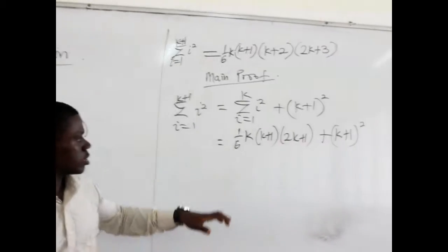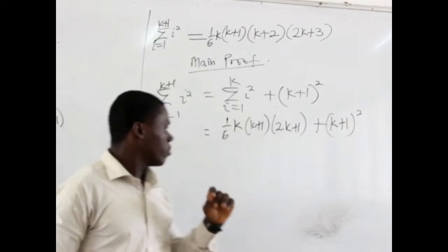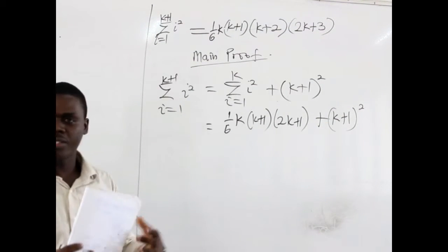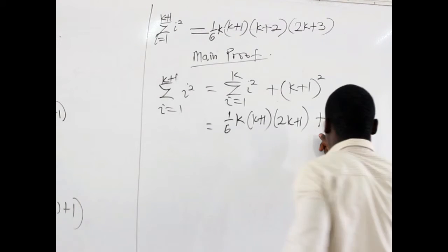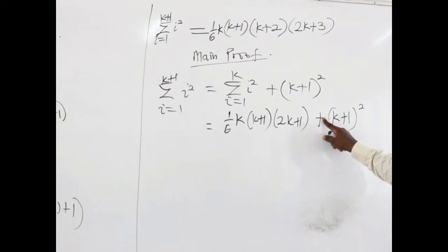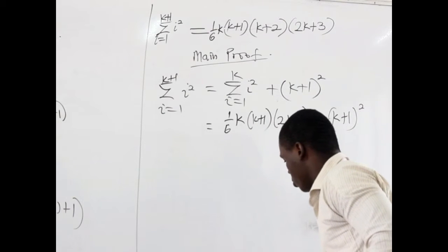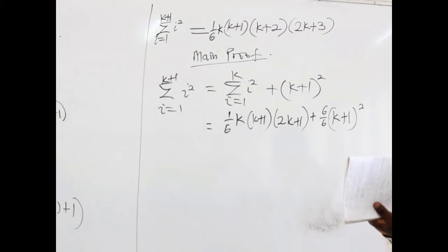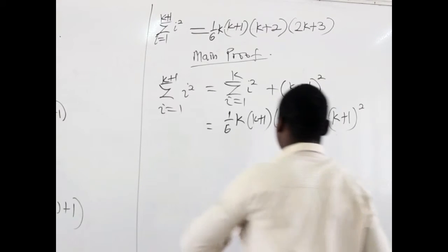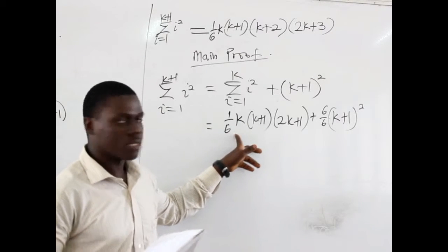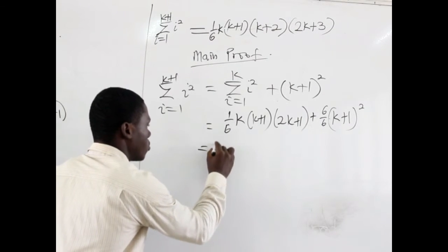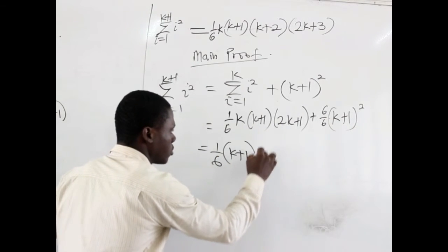We notice that k+1 appears in both terms, and we have (1/6) in the first term but not the second. We write the coefficient of the second term as 6/6 instead of 1, since 6 divided by 6 is 1 — no significant change. Now 6 is common and k+1 is common, so we factor out (1/6)(k+1).